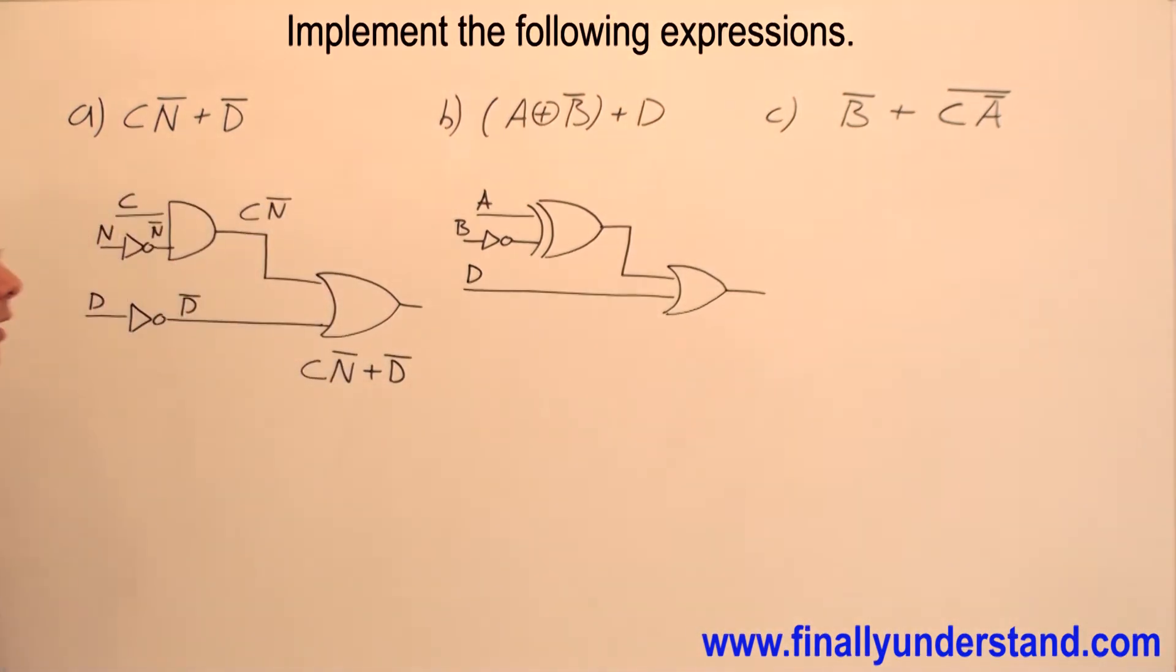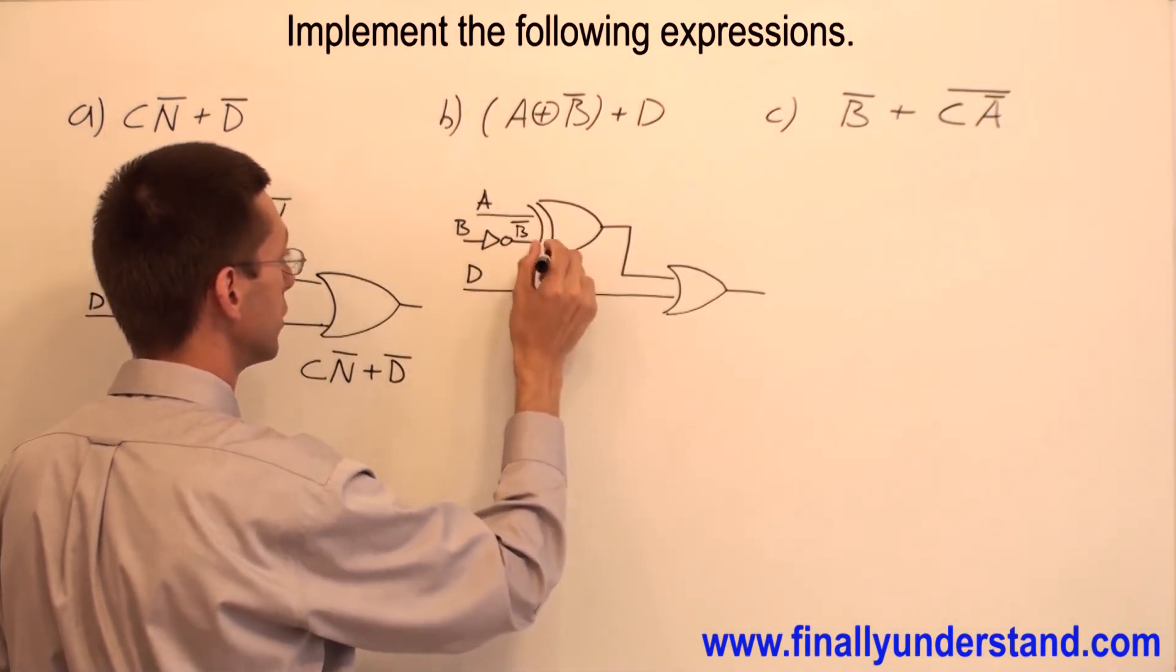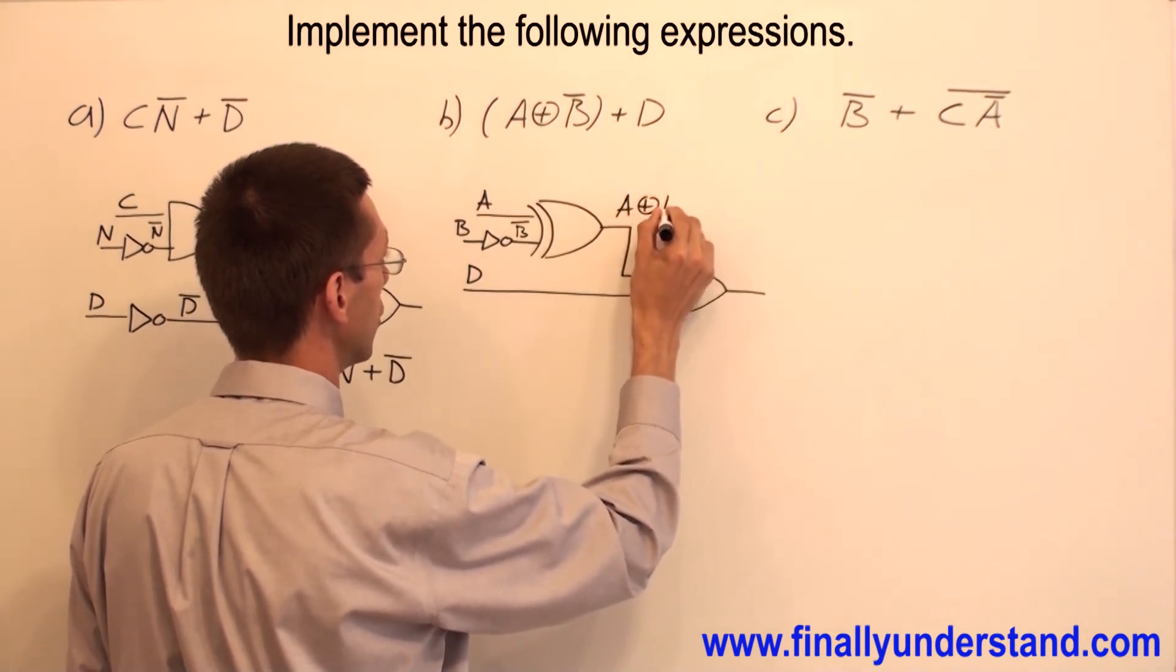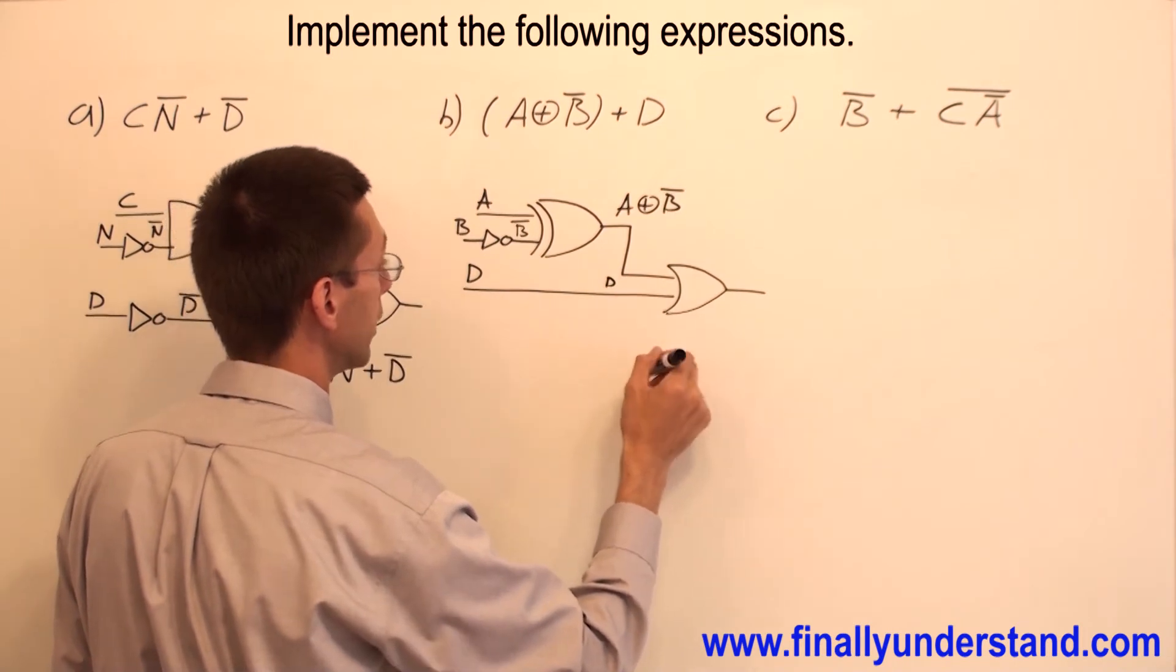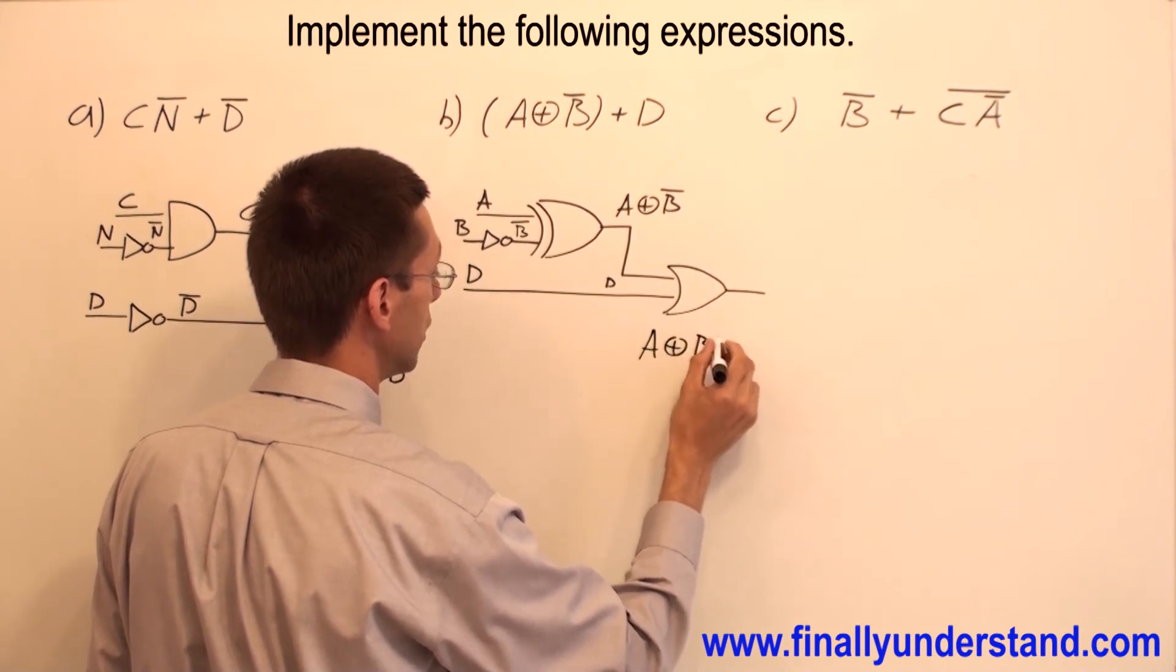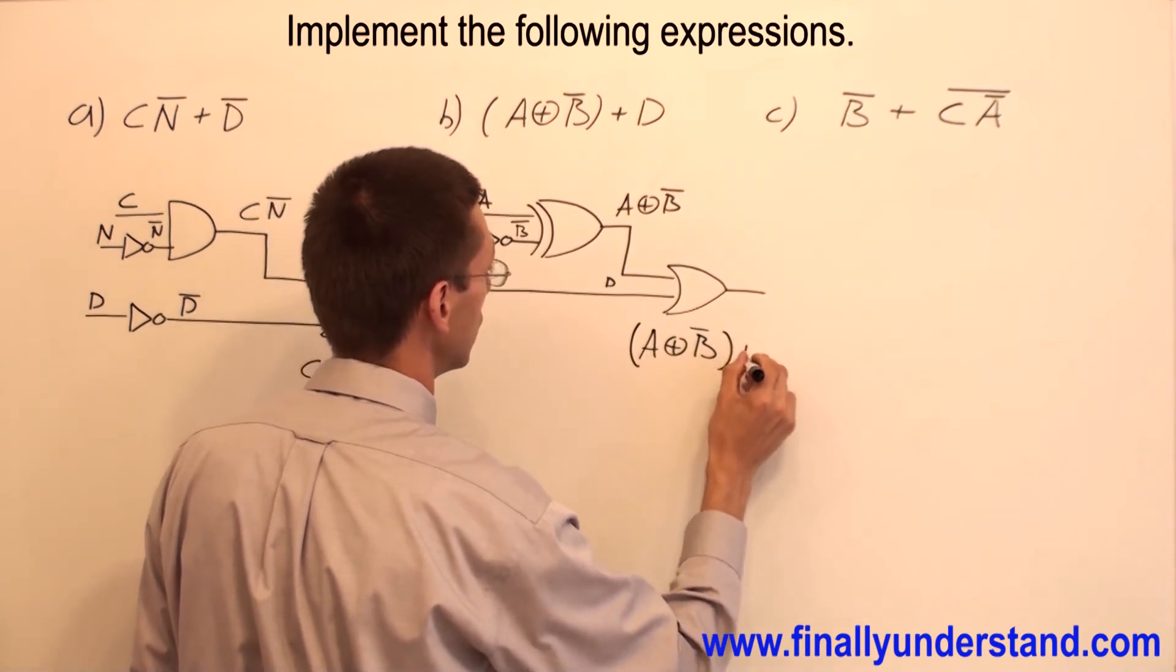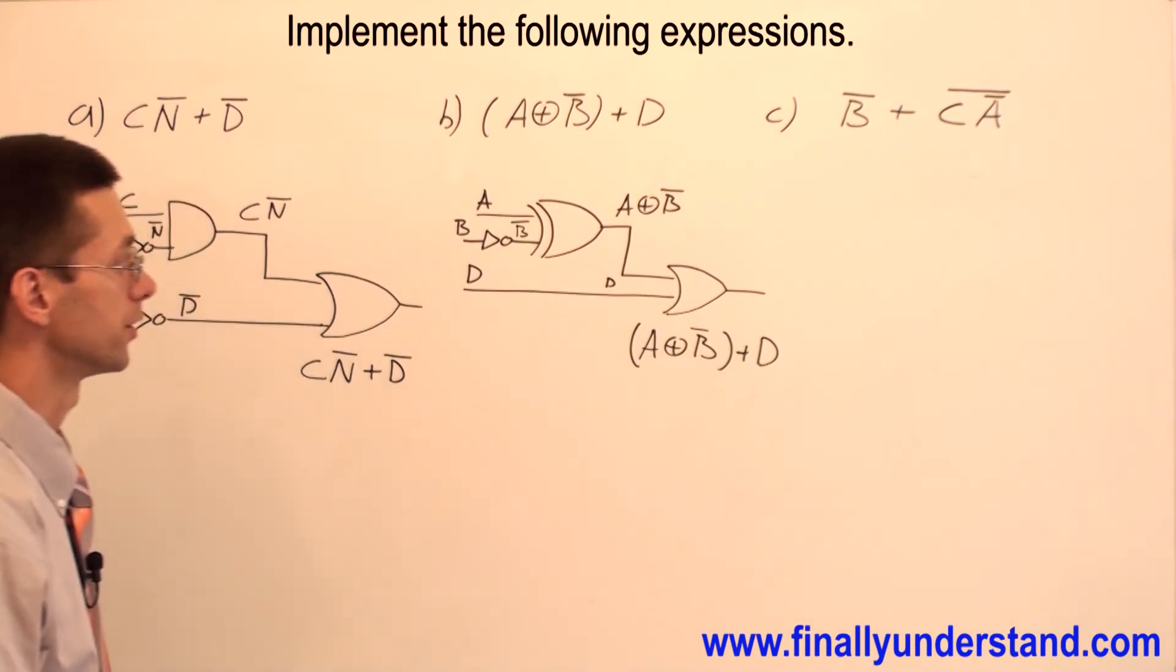Let's prove that our answer is correct. So this is A, this is B̄. I have exclusive OR. I have A exclusive OR B̄. This is D. So I'm going to have A⊕B̄ + D. Simple, isn't it?